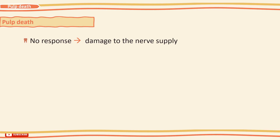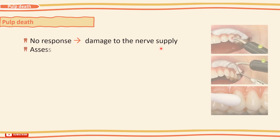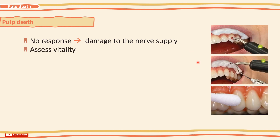Pulp death or necrosis. Remember that nerve response to vitality testing indicates damage to the nerve supply of the tooth, but not necessarily the blood supply. Therefore, following trauma, you should assess vitality in the light of symptoms, tooth colour, mobility, presence of buccal swelling, and radiographic evidence.